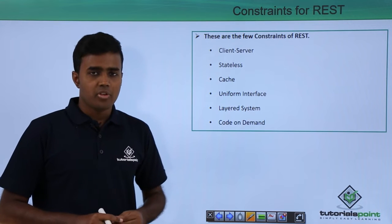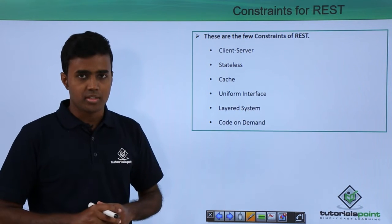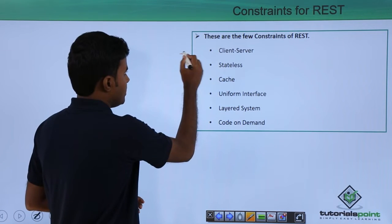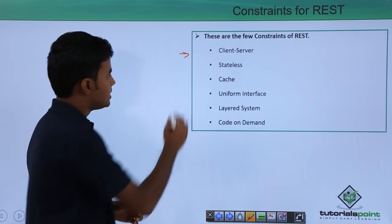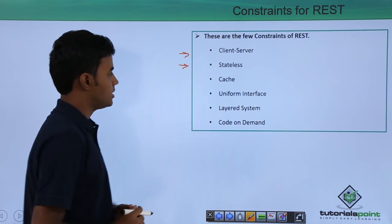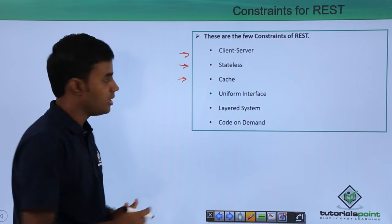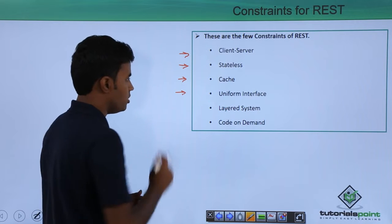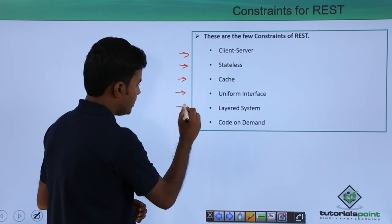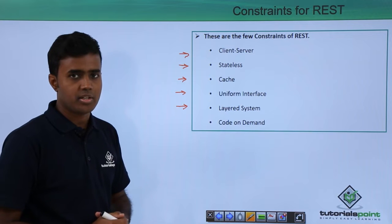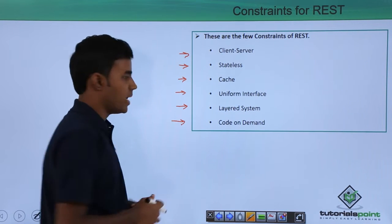There are totally six different constraints for REST. The first constraint is the client-server constraint. The second one is statelessness. The third constraint is the cache constraint. The fourth one is the uniform interface constraint. The fifth one is the layered system constraint and the last one is the code-on-demand constraint.